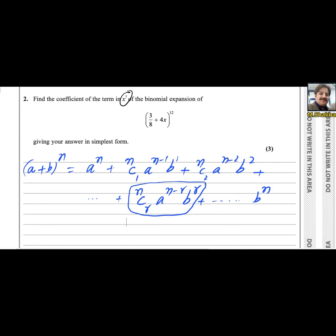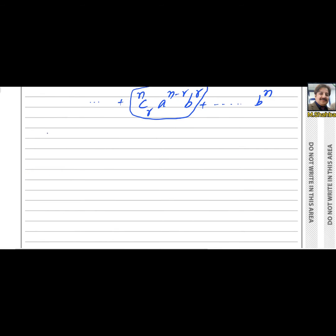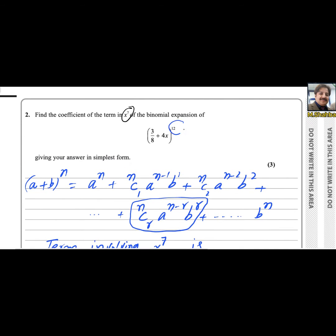In terms of finding the coefficient of x power 7 and term involving x to the power 7, we can use this formula. n is the whole power because in this question n is 12.